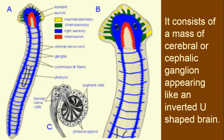It consists of a mass of cerebral or cephalic ganglion appearing like an inverted U-shaped brain. In this organism, if we look at the nervous system, there are ganglia visible at the head region. Ganglia means a group of many nervous cells collected together. In this group of nervous cells, relay work takes place — some sensation comes in and some impulses go out. This group is called a ganglion. And if we look at the structure of this ganglion, it appears like an inverted U-shape.